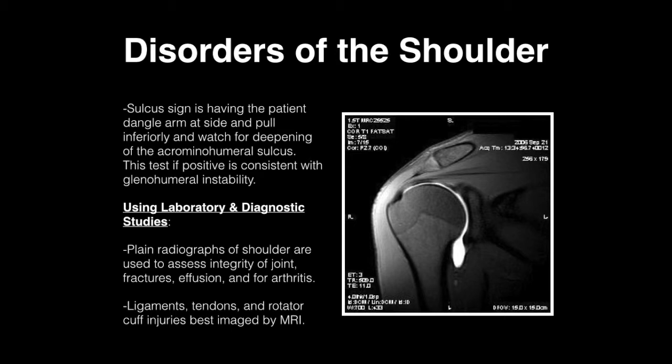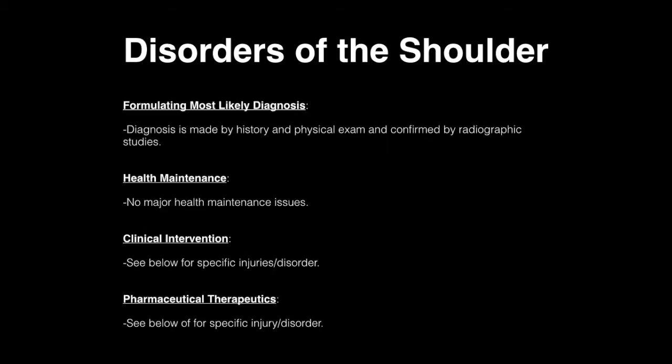Plain radiographs of the shoulder are used to assess the integrity of the joint, fractures, effusions, and arthritis. Ligaments, tendons, and rotator cuff injuries are best imaged by MRI. Diagnosis is made by a history and physical exam and confirmed by radiographic studies.